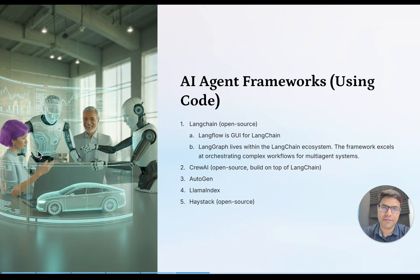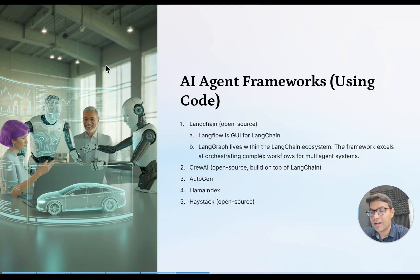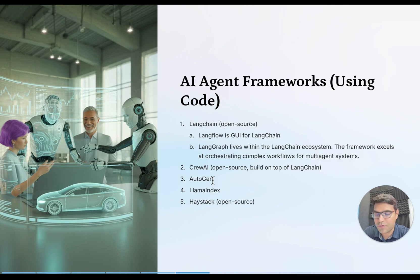Now let's talk about AI agent frameworks. An AI agent framework is just a way to create an AI agent with some predefined components. For those with a programming or data science background, platforms like LangChain — one of the most famous — let you build AI agents using Python. Similarly, there are platforms like CrewAI, Autogen from Microsoft, LlamaIndex, and Haystack. These are five of the most famous frameworks that use coding or programming to build AI agents.